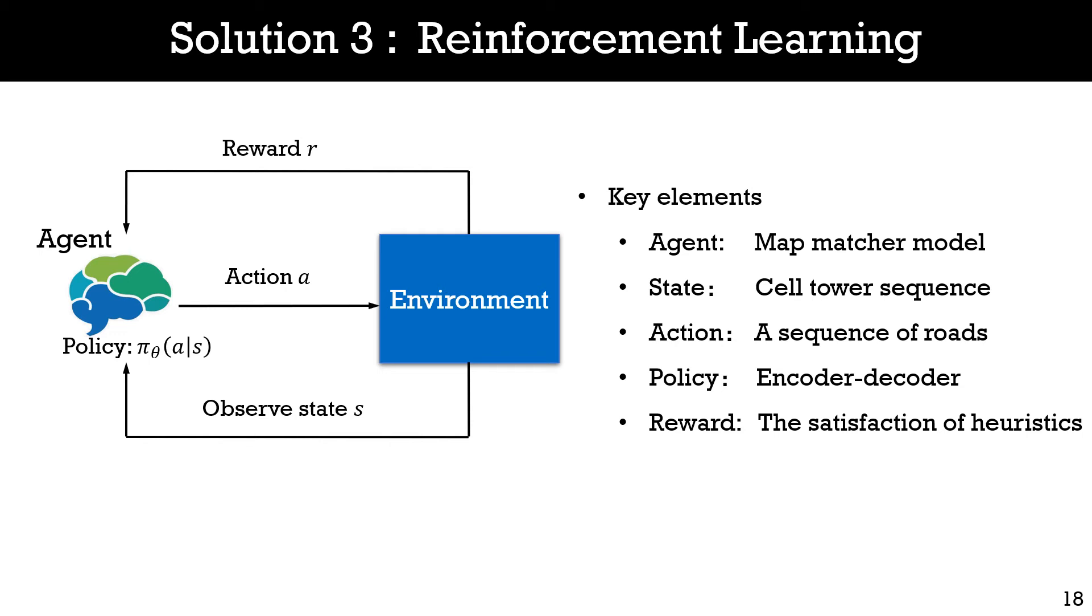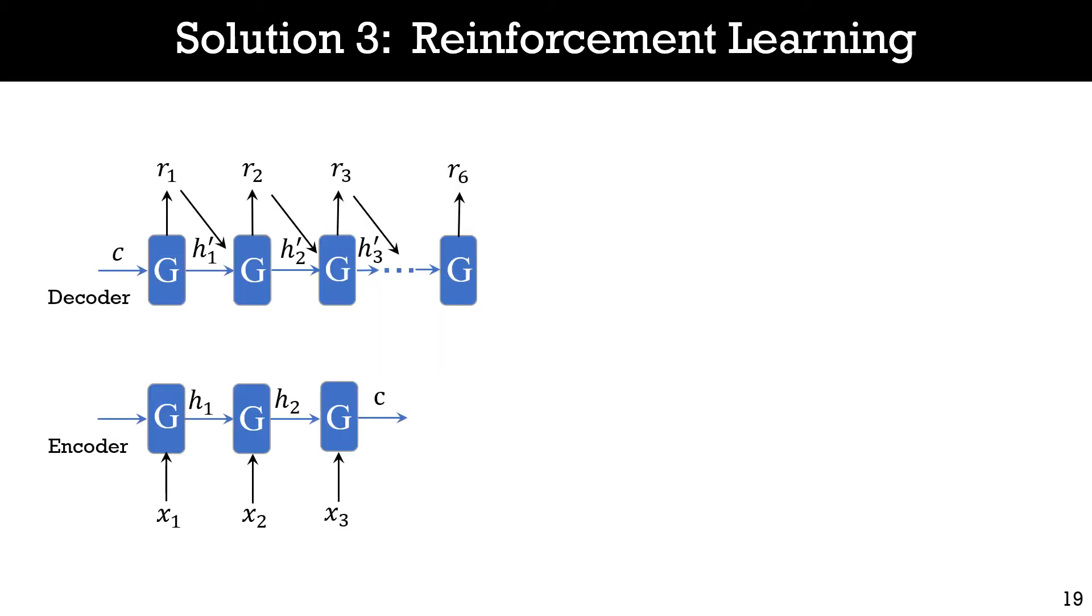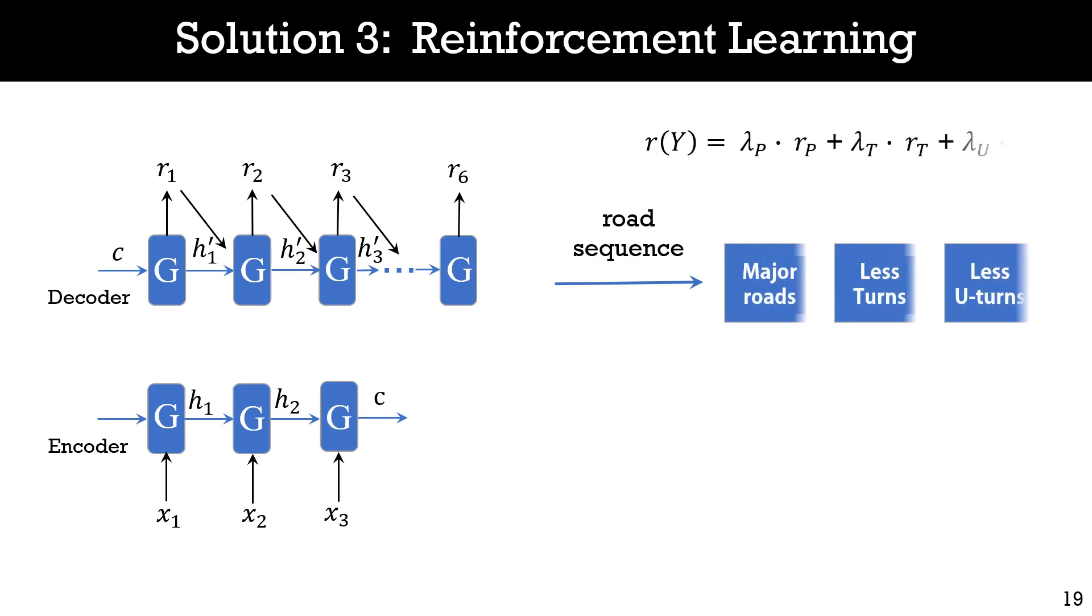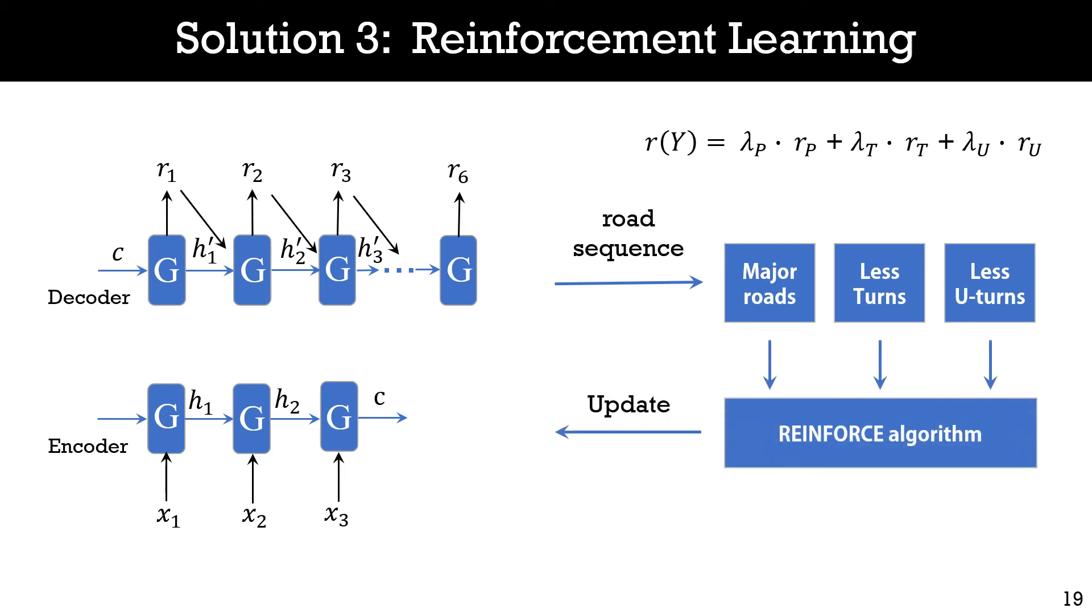Finally, the policy is optimized for better performance according to the reward. To apply reinforcement learning in our system, we first view the encoder-decoder map matching model as the agent and give the specific design of the other key elements. Most importantly, the reward is used to estimate the satisfaction of heuristics. Then, at every iteration, the map matching agent reads the cell tower sequence as the state input and generates an action sequence, which is also the map matching result of our model. Next, the reward is calculated to measure the satisfaction of heuristics. The three components in the reward function evaluate each heuristic respectively. Finally, we use the reinforcement learning algorithm to update the policy of the map matching agent based on the reward.